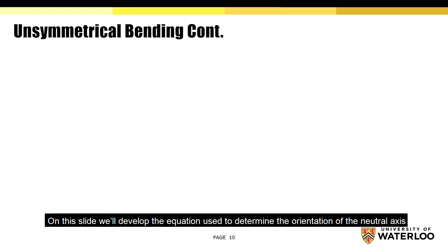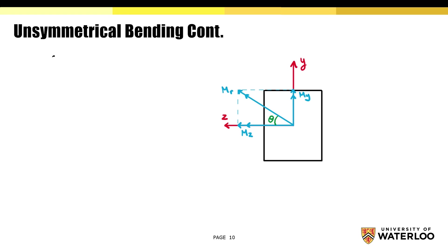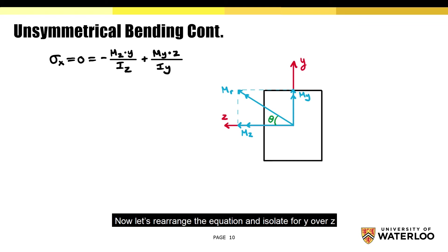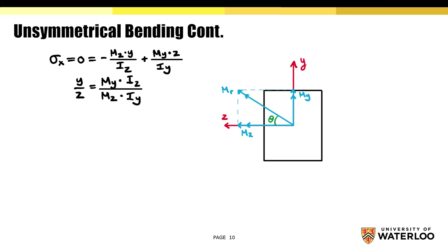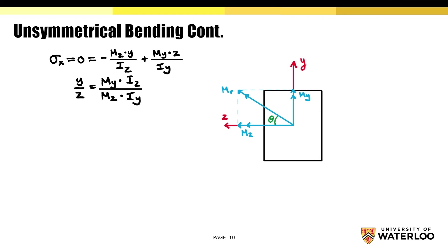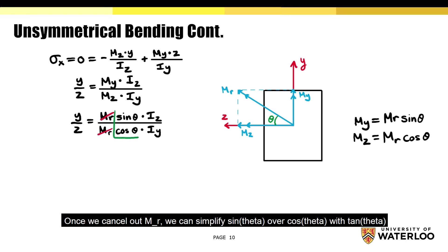On this slide, we'll develop the equation used to determine the orientation of the neutral axis. Here's the superimposed cross section of the diagram from the previous slide. Since the normal stress is zero at the neutral axis, we can take the bending stress formula we developed and equate it to zero. Now let's rearrange the equation and isolate for y over z. If you recall, the angle between the positive z axis and the resultant moment MR is theta, and so we can substitute My and Mz with MR sin(theta) and MR cos(theta) respectively. Once we cancel out MR, we can simplify sin(theta) over cos(theta) with tan(theta).